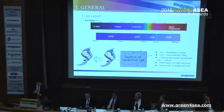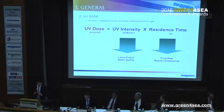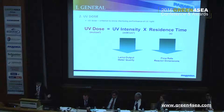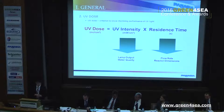UV light can also play a role in destroying the epidermal cells — the surface of cells — UV light can make them explode, so it can also be classified as a killing method. In order to estimate UV light performance, we generally use UV dose as a criterion, calculated by multiplying UV intensity and the residence time of microorganisms in the UV reactor. Lamp output and water quality influence UV intensity, while flow rate and UV reactor dimensions influence residence time.